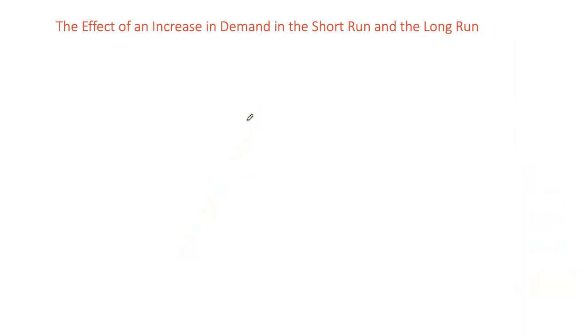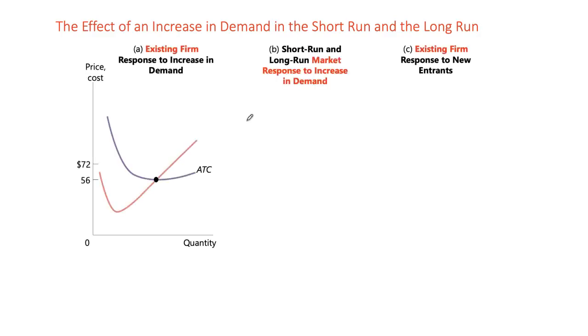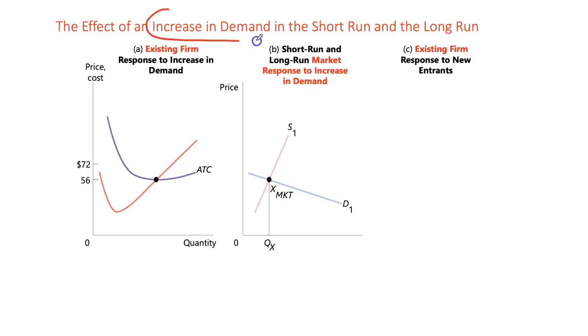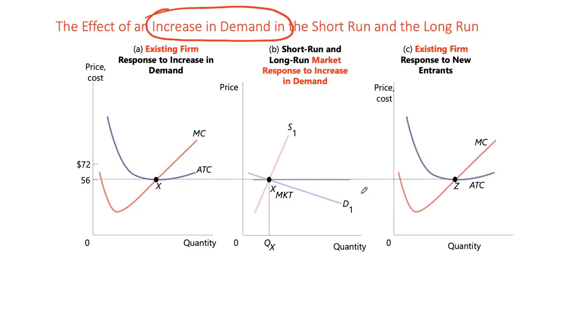Assuming identical underlying cost structure, we can see how changes in market demand lead to entry and exit in the long run, shaping the long-run industry supply curve. We will work with three panels: the first shows the working of an existing firm when market demand increases; the second shows market equilibrium in the industry as a whole; and the third shows the decision-making process of the incumbent firm in both the short run and long run response. We start with initial long-run equilibrium of zero economic profit, with demand and supply intersecting at point X — all firms earning zero economic profits.